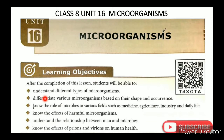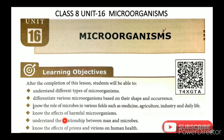The learning objectives are: understand the different types of microorganisms; differentiate various microorganisms based on their shape and occurrence; know the role of microbes in various fields such as medicine, agriculture, industry and daily life; know the effects of harmful microorganisms; understand the relationship between man and microbes. You can find a QR code link in the description box.